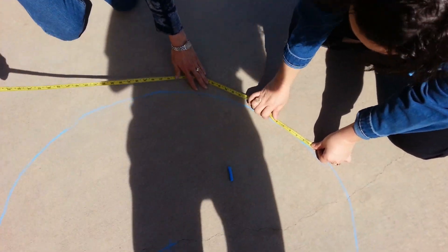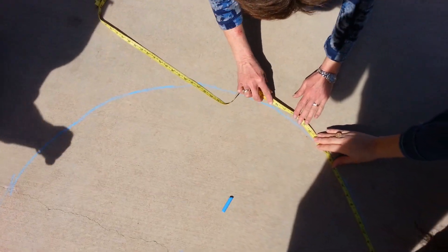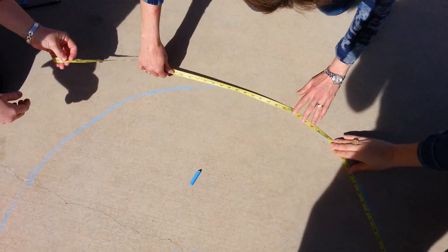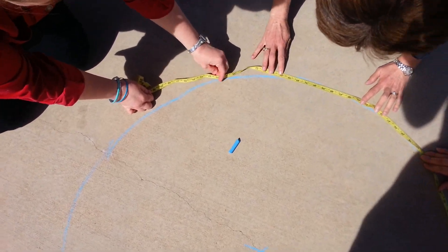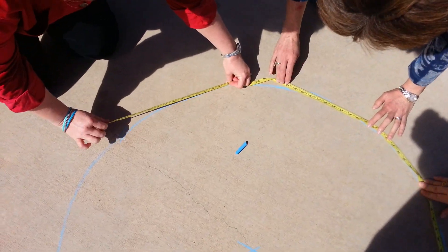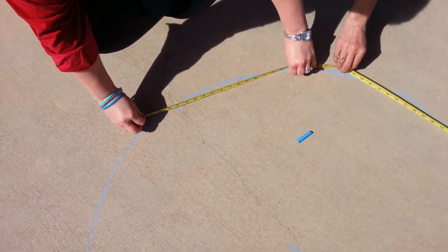And then you're going to take your tape measure like we're doing here. This is where you need your group to help you out to be able to stretch this tape around the outside of the circle. This is measuring the circumference of the circle, so we're going to stretch this out.